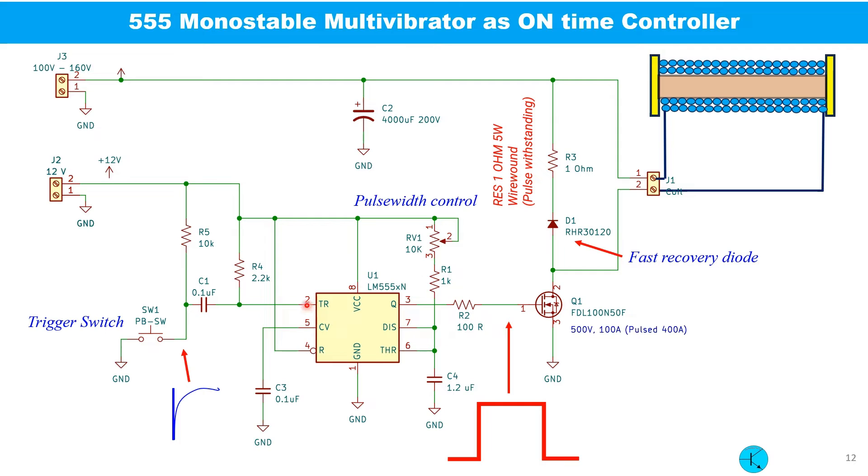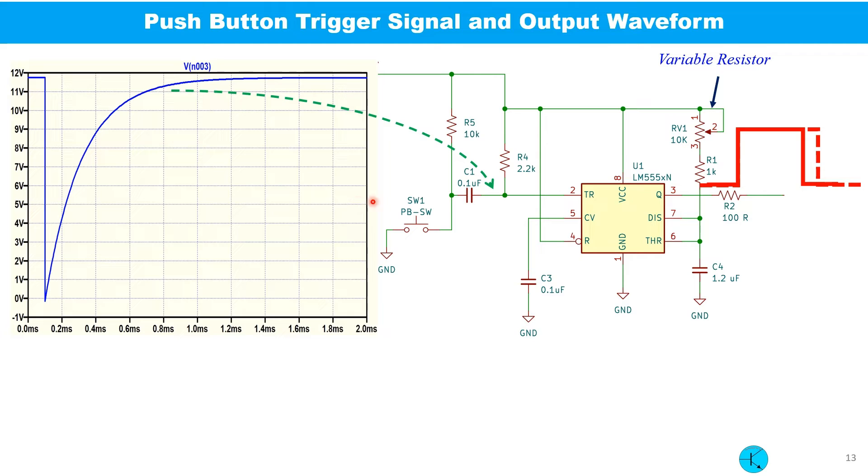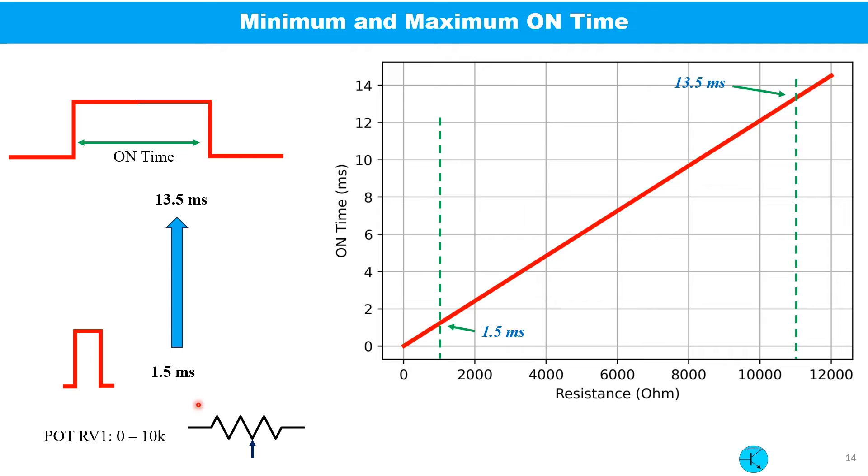This is the circuit that I used to drive the coil. A 555 timer IC is used as a monostable multivibrator. Once this trigger button is pressed, we will get a pulse of duration which can be controlled by this variable resistor of 10k. The trigger pulse and the output pulse of the monostable multivibrator is shown here. Once this button is pressed, you can see a very sharp pulse is generated at pin 2 of 555 timer. And at the output, we can get a pulse and the pulse width can be varied using this potentiometer. So varying the resistor from 0 to 10k, we can get at the output a pulse width 1.5 millisecond to 13.5 millisecond.